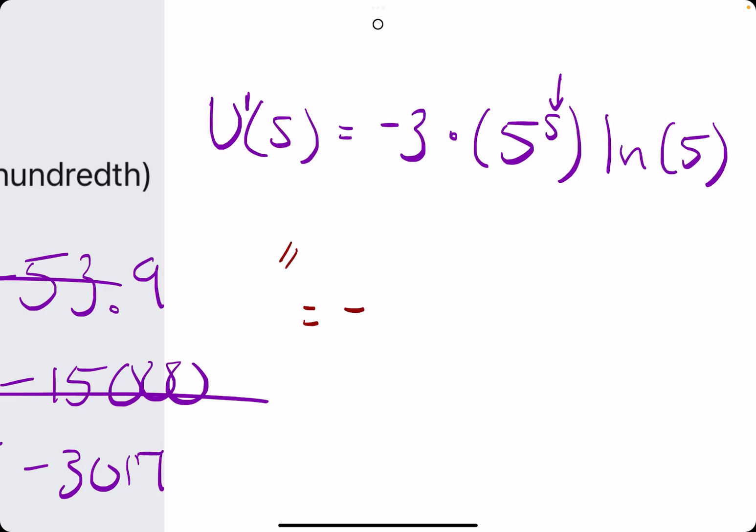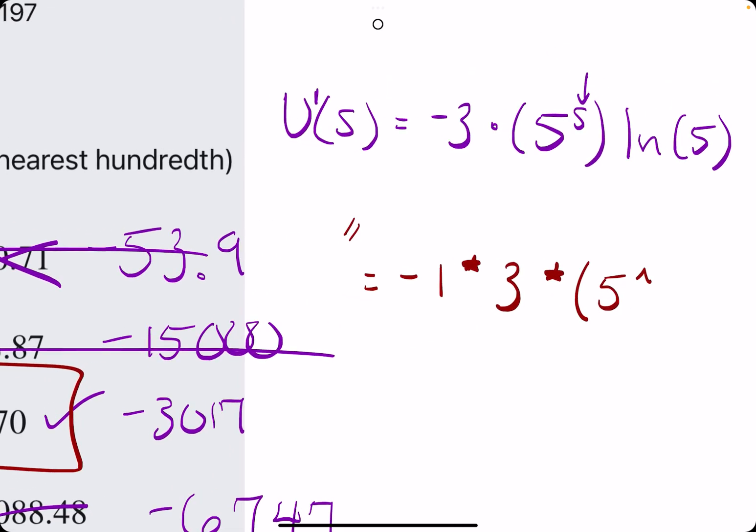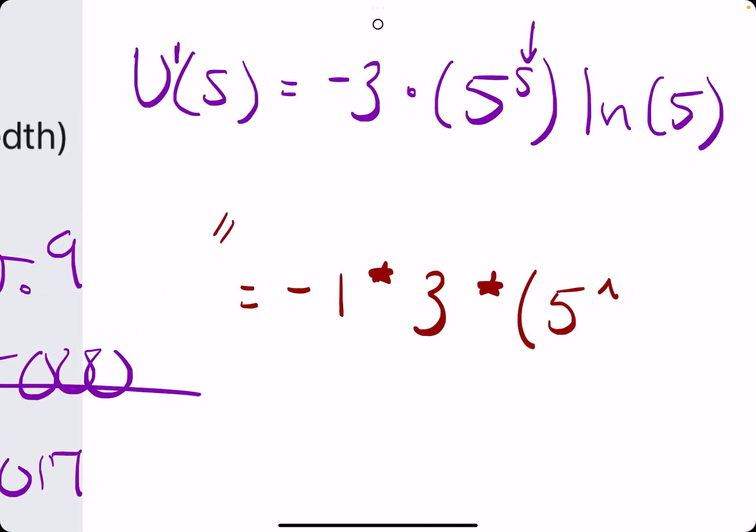you could type in negative. So for negative 3, just to make sure, I would do negative 1 times 3, and then times, in parentheses, 5, raised to the, and then I would click on the cell A1.